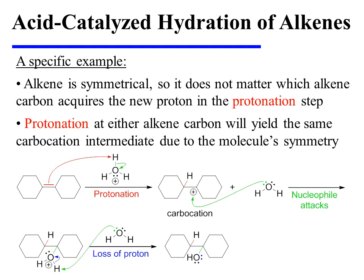In this specific example, the alkene substrate is symmetrical, so it does not matter which alkene carbon acquires the new proton during the protonation step. Protonation at either site will yield the same carbocation intermediate and ultimately the same reaction product due to the molecule's symmetry. The alkene is first protonated, and this affords a carbocation intermediate that is attacked by water. The oxonium ion that results sheds a proton to the medium, yielding the alcohol product.